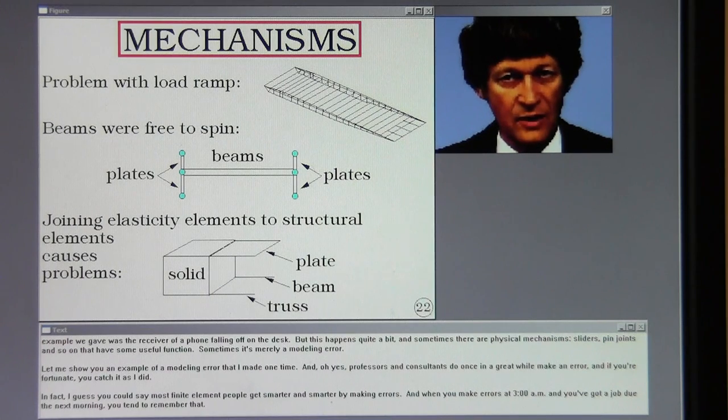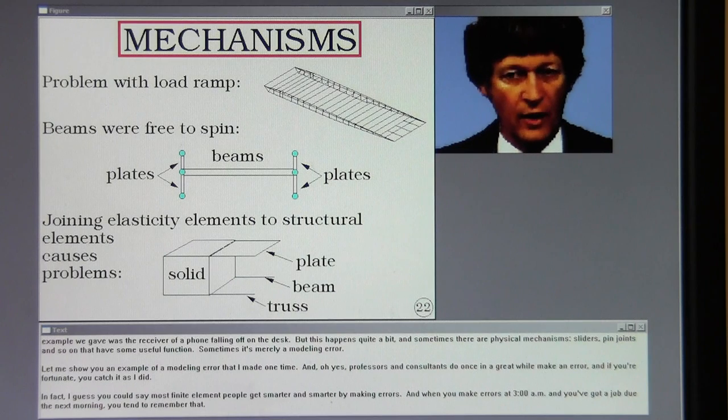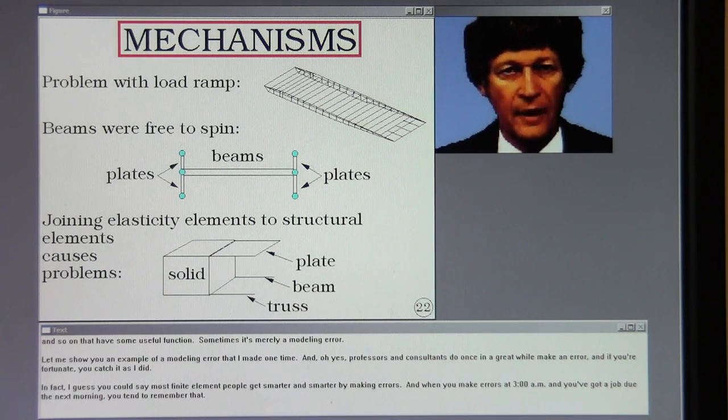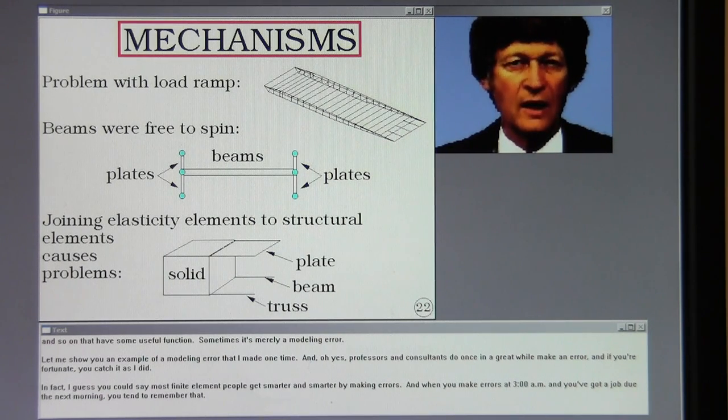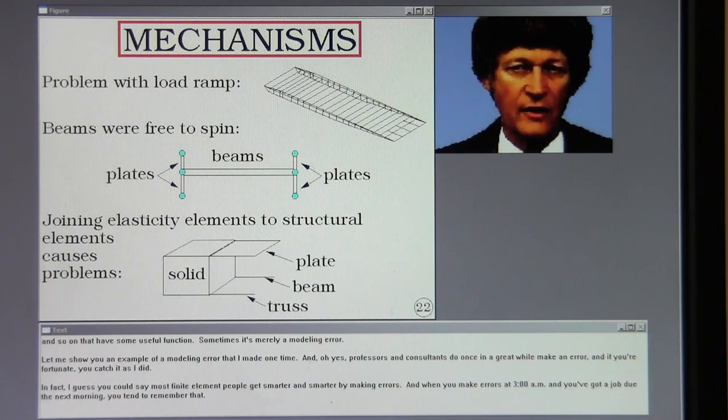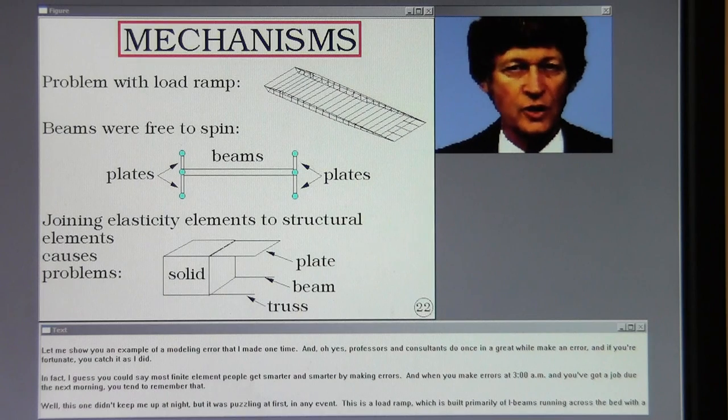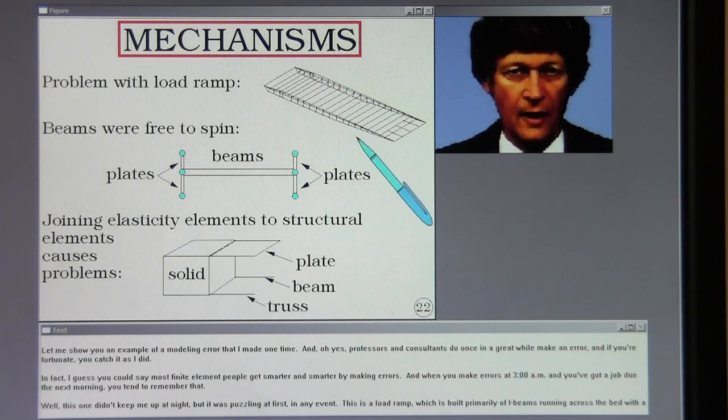We mentioned earlier the possibility that a portion of a structure could become loose in some sense and clatter around. These are called mechanisms. And the first example we gave was the receiver of a phone falling off on the desk. But this happens quite a bit. And sometimes there are physical mechanisms, sliders, pin joints, and so on that have some useful function. Sometimes it's merely a modeling error.